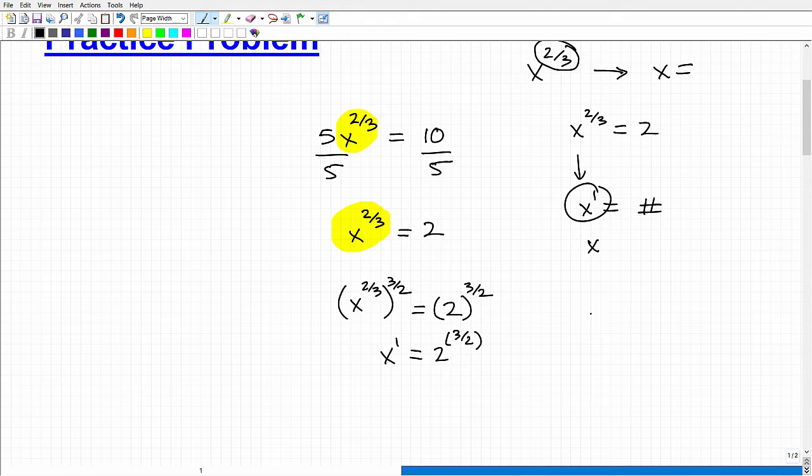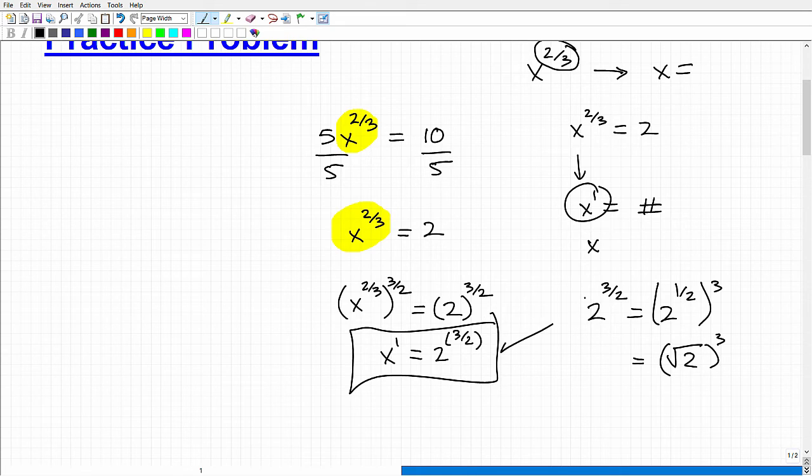So what does that mean? Well, 2 to the 3/2 power, kind of look at it this way. That's the same thing as 2 to the 1/2 raised to the 3rd power. So 2 to the 1/2 is the same thing as the square root of 2 cubed. So that's one form of your answer. But if you, as my student, gave me this answer, I would go ahead and accept that. Now, of course, you can go into your calculator and take 2 and raise it to the 3/2 power.